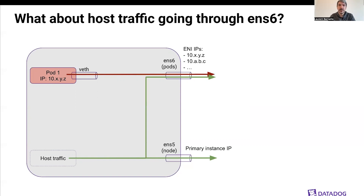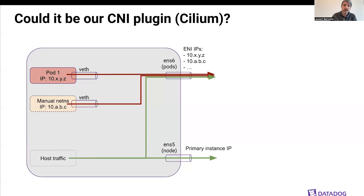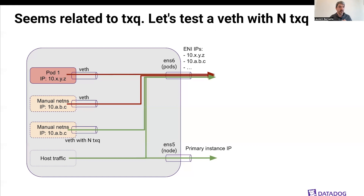We also wanted to know if it was related to the ENS6 interface configuration, so we forced some host traffic to use the additional interface — and that was also completely fine. At that point, we started thinking it might be related to our CNI setup. We created a network namespace manually, configured it, and sent traffic through it. That traffic was also impacted and was using a single queue — the same issue. We then wondered what would happen if we changed the number of queues on the virtual ENI device. We created a network namespace using a virtual ENI device with the same number of queues as ENS6, and that actually fixed the problem.